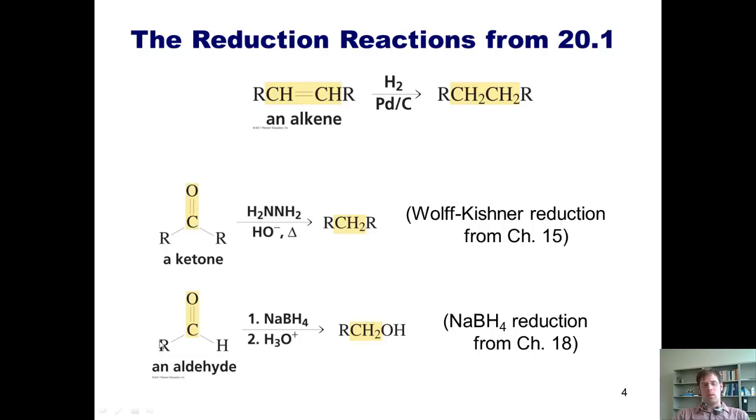Similarly, from chapter 18, we learned that if you take an aldehyde or a ketone and treat it with sodium borohydride followed by acid quench, you can convert it to a primary alcohol. Is this an oxidation or a reduction?